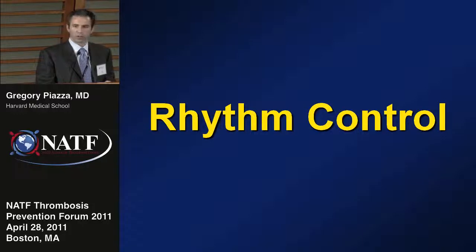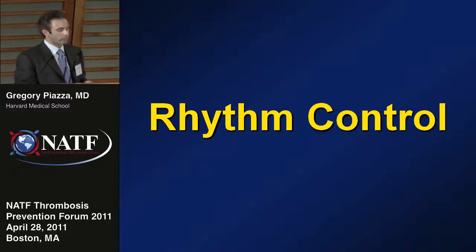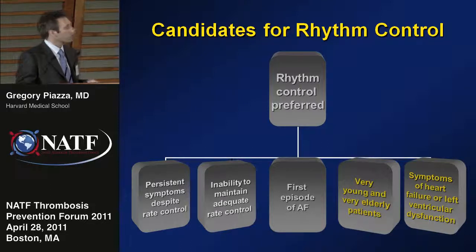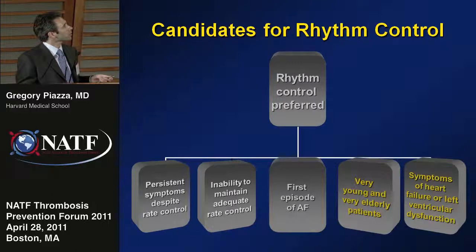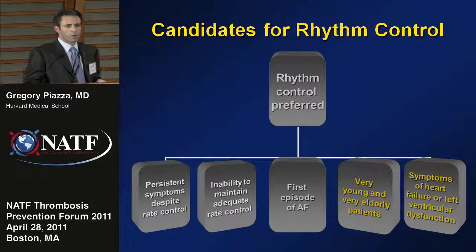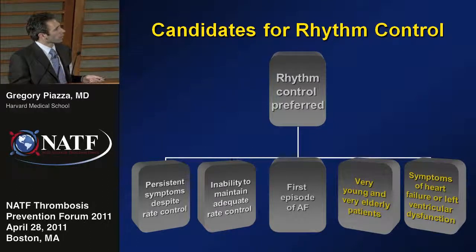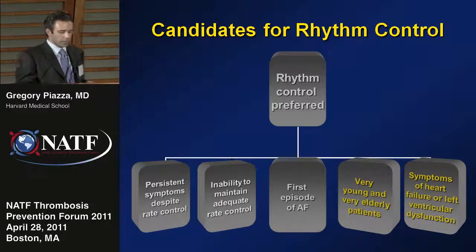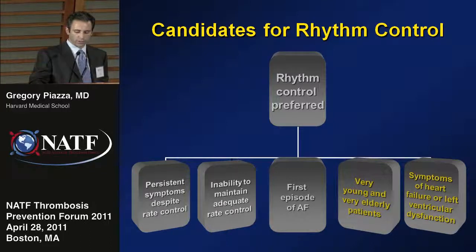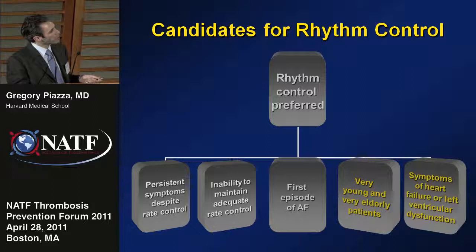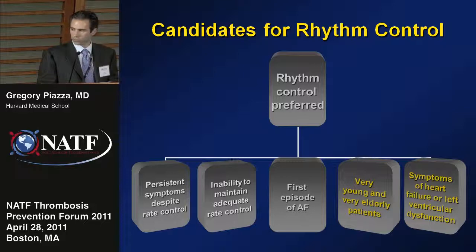Rhythm control is preferred in patients who have persistent symptoms despite rate control, patients who are unable to maintain adequate rate control, and is often favored in patients with a first episode of atrial fibrillation. Very young and very elderly patients may also be candidates, as well as patients with symptoms of heart failure or left ventricular dysfunction, though these latter two groups can sometimes be controversial when pursuing a rhythm control strategy.